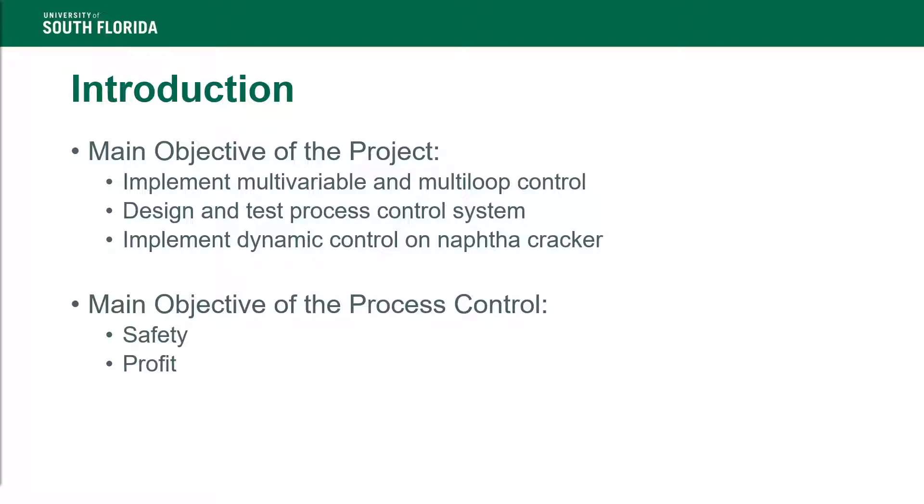The main objective of the project was to design, implement, and test multivariable and multi-loop control schemes such as feedback, feedforward, and cascade control to NAPHTHA cracking furnace.